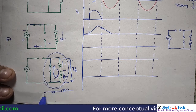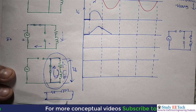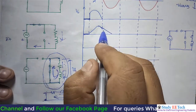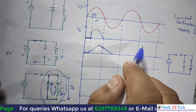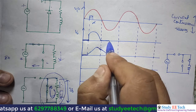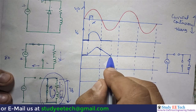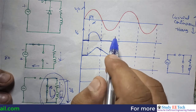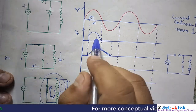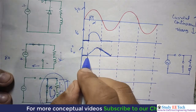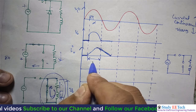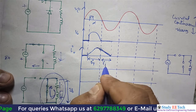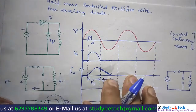So we get zero output voltage but the current continues to flow and eventually decays to zero. This gives us the output current profile: from alpha to pi the current is carried by the main thyristor, and from pi onward the current freewheels through the freewheeling diode (FD). So we get zero output voltage during the freewheeling interval but non-zero current.